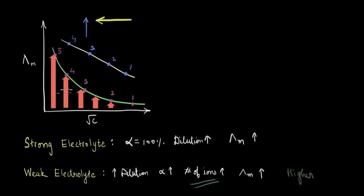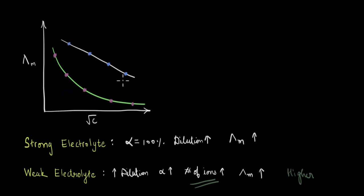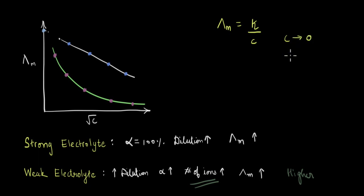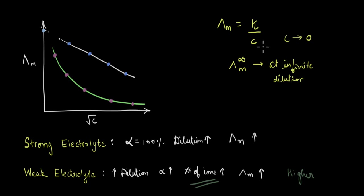There is more information we can get from these curves. Since the strong electrolyte data falls on a straight line, if we extrapolate it towards the y-axis, it intersects the y-axis at a specific point. Looking at the equation for molar conductivity — kappa divided by c — as we go towards the origin, the value of c is decreasing. This value of lambda m obtained when c goes almost to 0 is called lambda m infinity, the molar conductivity at infinite dilution. When the concentration is reduced to a very small number, the corresponding dilution is very large, which is why we call this the molar conductivity at infinite dilution.